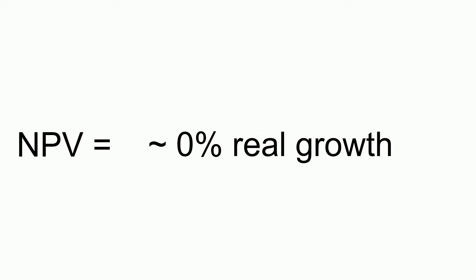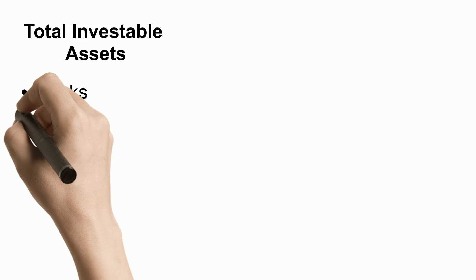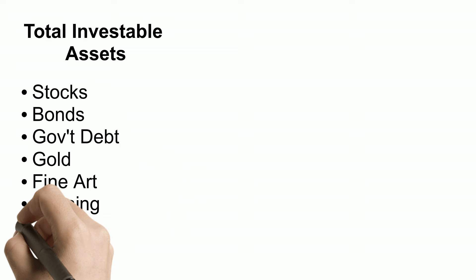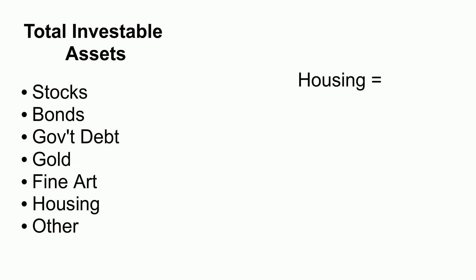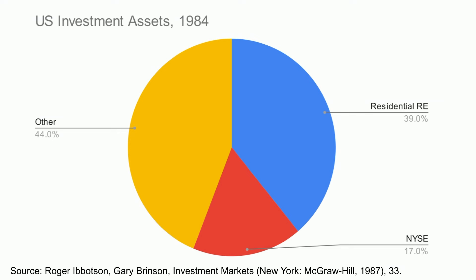The second reason why housing prices tend not to budge from zero has to do with the sheer size of the housing market. If you were to add up all investable assets like stocks, bonds, government debt, gold, fine art, housing, etc., what percent of the total investable market is accounted for by residential housing? Historically, residential real estate has represented the largest asset class by far. Going back to 1984, residential real estate made up 39% of total investable assets — the largest single asset class by far. The second largest was the New York Stock Exchange, accounting for 17% of the total.